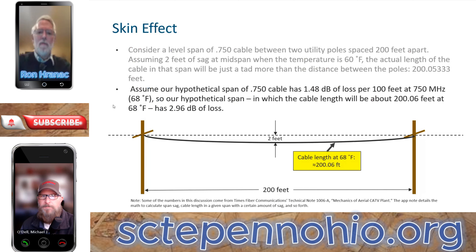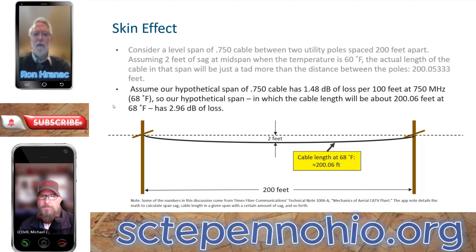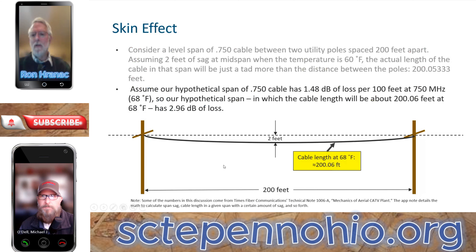Looking at the spec sheet for 750 P3 type cable, the attenuation at 750 megahertz is about 1.48 dB per 100 feet, and that's at 68 degrees Fahrenheit. So in our hypothetical span of just over 200 feet between the two poles, the insertion loss is just under 3 dB — specifically 2.96 dB of loss between those two poles.